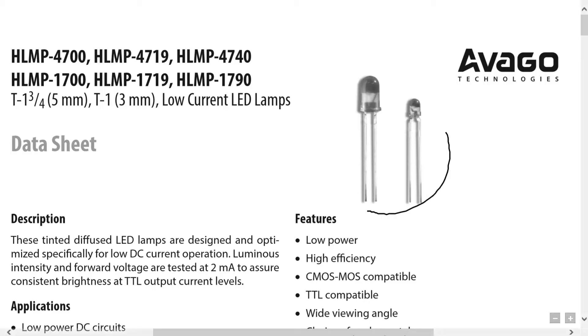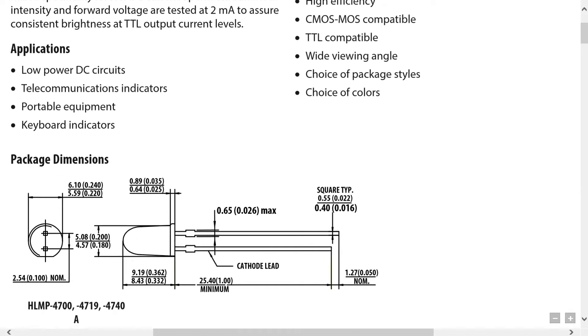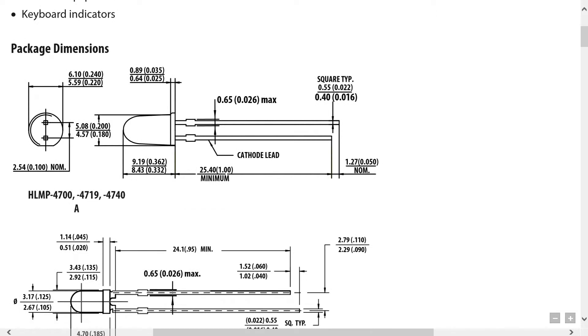So there is our LED right there. So let's see if we can see a circuit diagram for the device. Here we are. We see in this picture here that it shows us the two leads. The anode is the longer lead, and the cathode is the shorter lead.